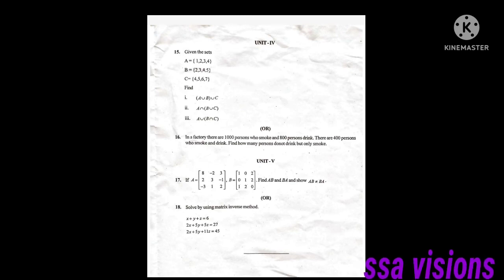Next we have to go to unit 4. Question 15 is about sets. In this factory, there are 1000 persons, 800 persons smoke, 800 persons drink, and 400 persons who smoke and drink. Find how many persons do not drink but only smoke.